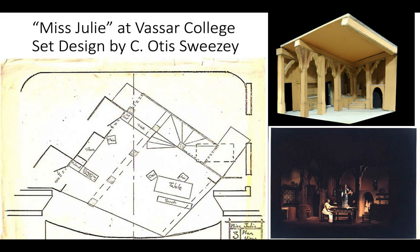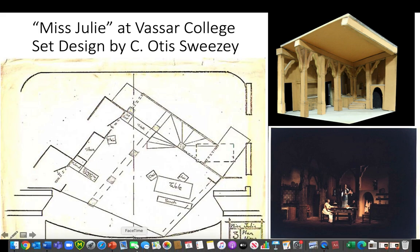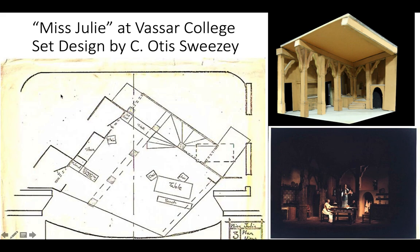Here's an example from C. Otis Sweezy at Vassar College. He's done Miss Julie, which is a very famous Strindberg play. You can see he has a very clean cut line there in the middle — a cut line ground plan. We see three different levels here: the ground plan, the white model, and then the actual utilized set. You can see this is only a glance at what this fully realized production comes to be.